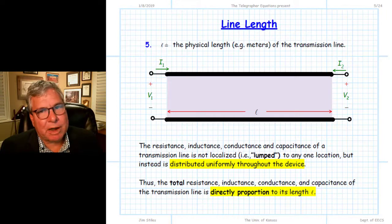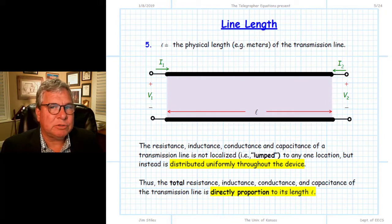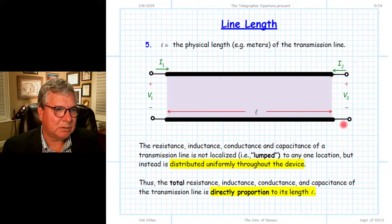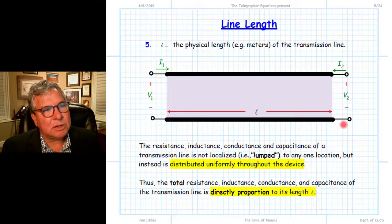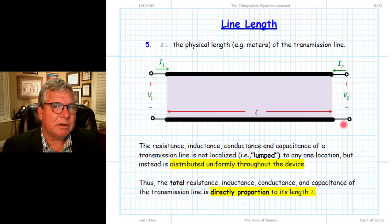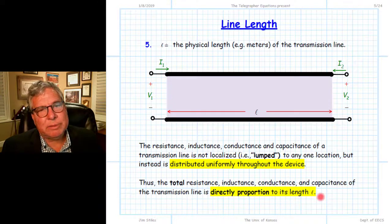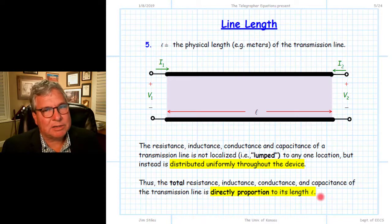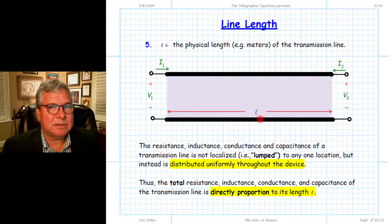The fifth real-value parameter used to characterize the transmission line is the length of the transmission line itself, which we'll call L — the physical distance from one port to the other. The five parameters are R, G, L, C, and the length. The length can be used to determine total resistance, capacitance, or inductance by multiplying the per-unit-length value by the length of the line.